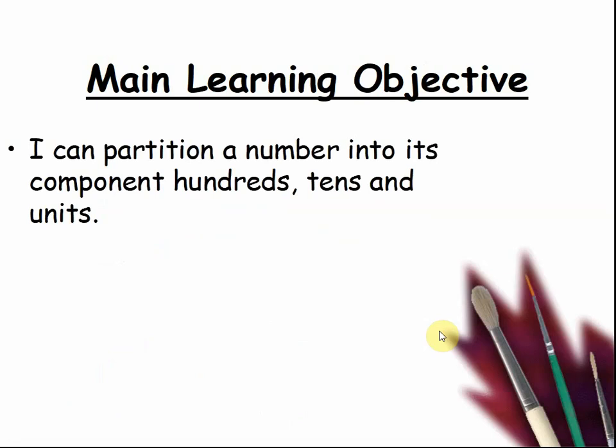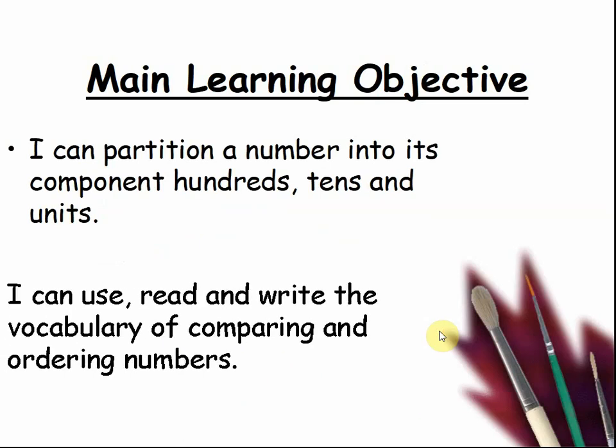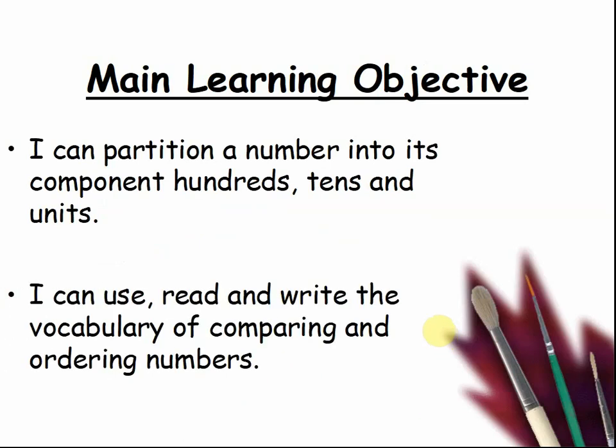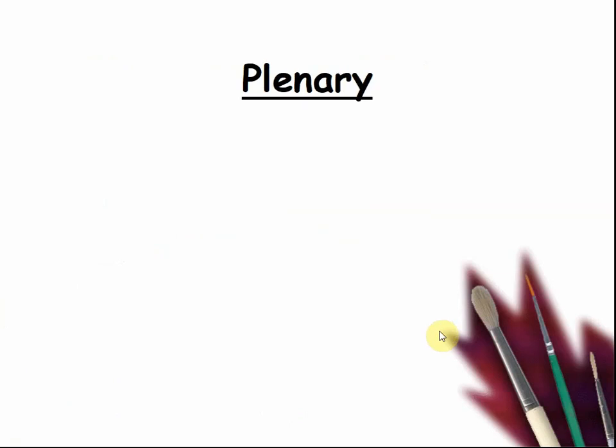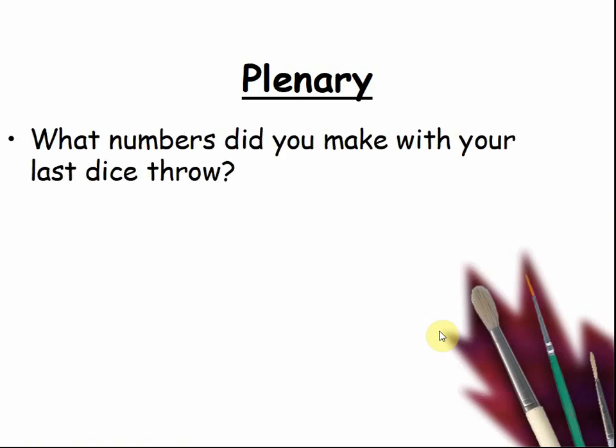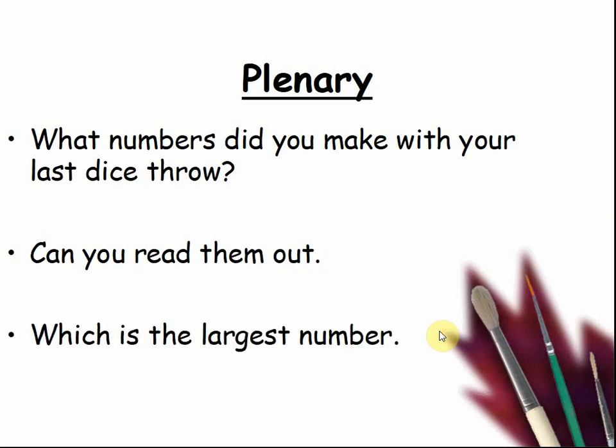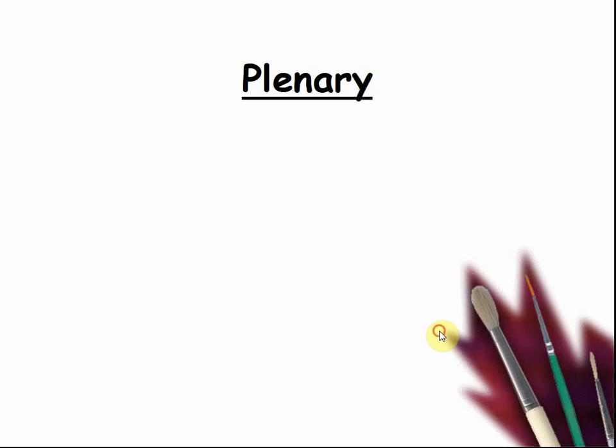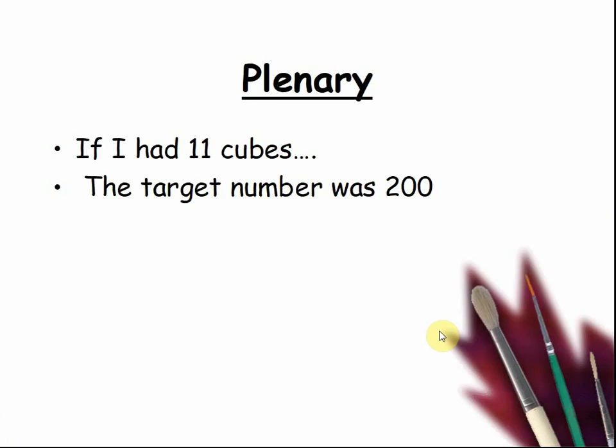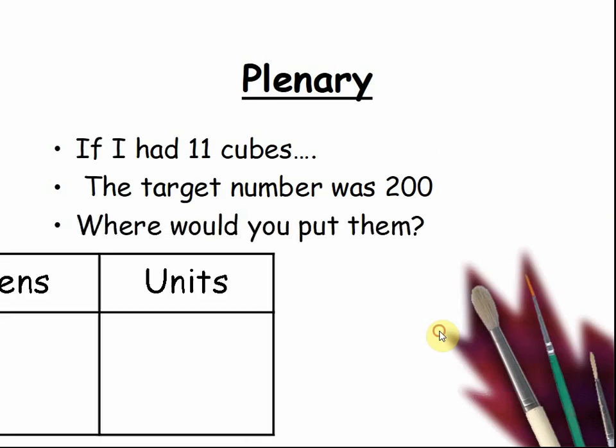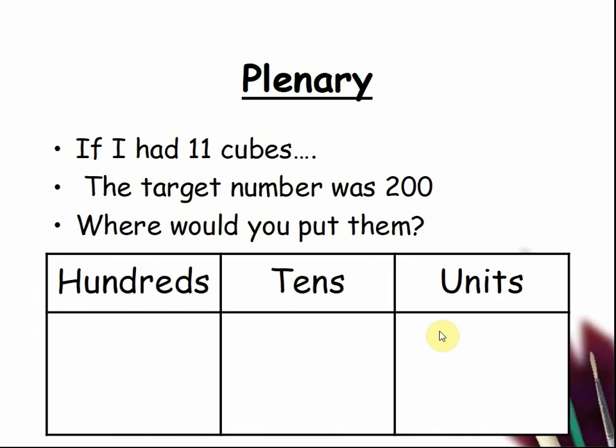The main learning objective today was I can partition a number into its component hundreds, tens and units. I can use and read the vocabulary of comparing and ordering numbers. What numbers did you make with your last dice throw? Can you read them out to the class? Which is the largest number? Which is the smallest? If I had 11 cubes, the target number was 200. Where would you put them? Pause the video and have a try.